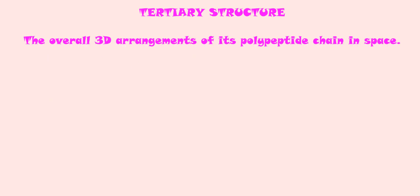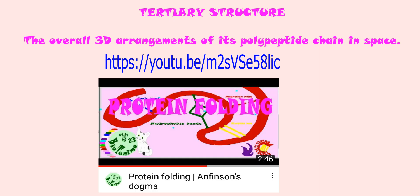Tertiary structure. The tertiary structure of a protein refers to the overall three-dimensional arrangement of its polypeptide chain in space. For more information, please check on this video.